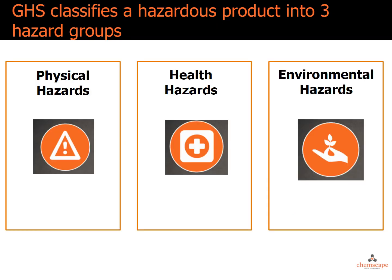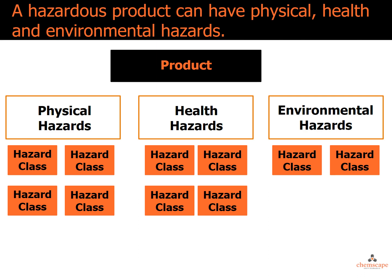GHS classifies a hazardous product into three hazard groups: physical hazards, health hazards, and environmental hazards. A hazardous product can have physical, health, and environmental hazards. Each of these hazard groups is broken down into classes and categories, which may differ by country.